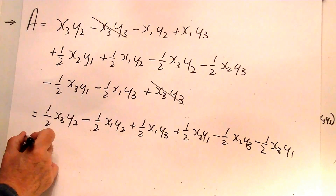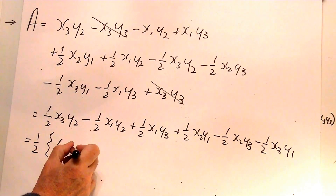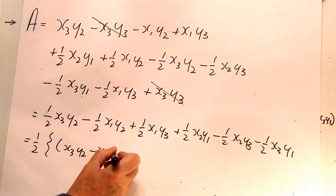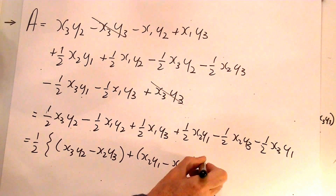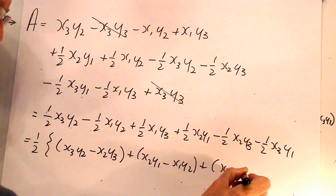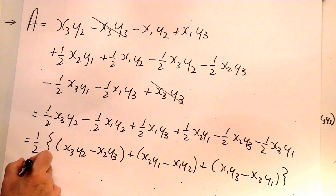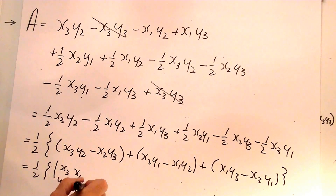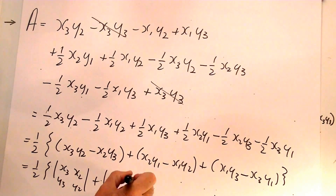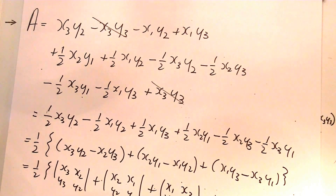Almost there. This becomes a half outside of — after rearranging: x3·y2 minus x2·y3, plus x2·y1 minus x1·y2, plus x1·y3 minus x3·y1. These are the determinants, and this gives us our required result. And that's the proof.